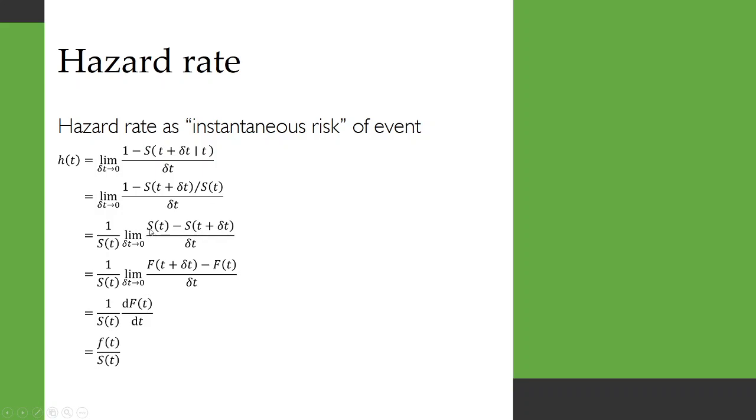We also know that the survival function is related to the cumulative distribution function, capital F, by S equals 1 minus F. So those ones will cancel out and we'll end up with F(t + delta t) minus F(t). Now this is exactly the formula for the differential of capital F.